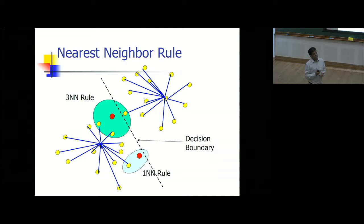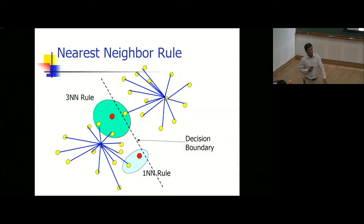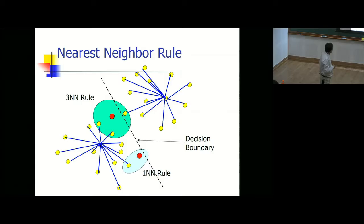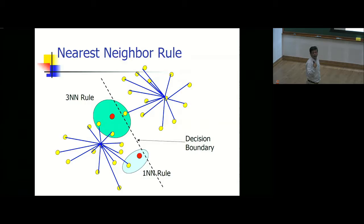If I take height and weight and a new person arrives, I measure those two parameters and plot them. Now I need to tell whether that person is Indian or German. There are many algorithms. Let us start with the simplest one: KNN, K-Nearest Neighbor. The idea is that whatever is my nearest neighbor, I go to that class.